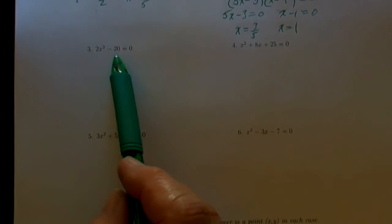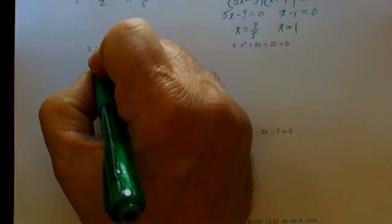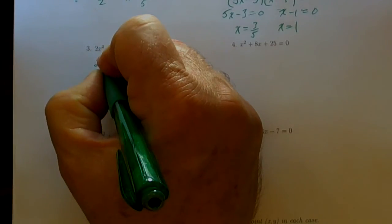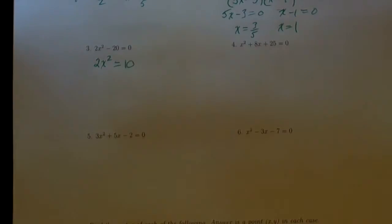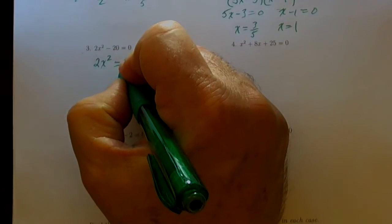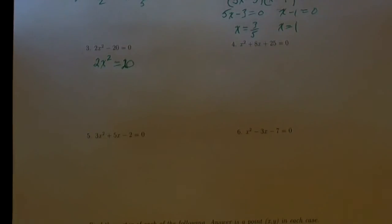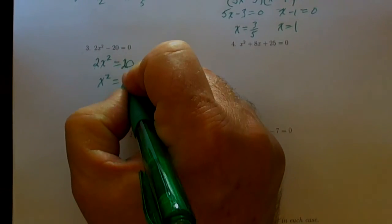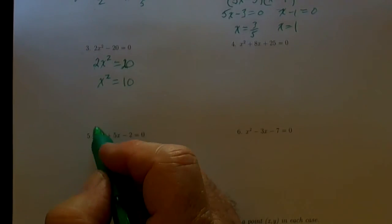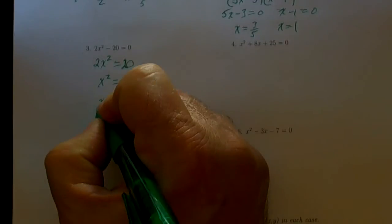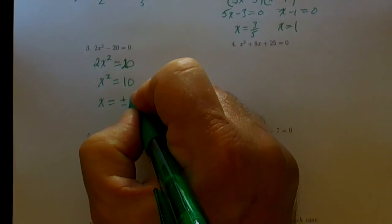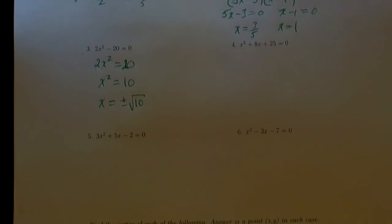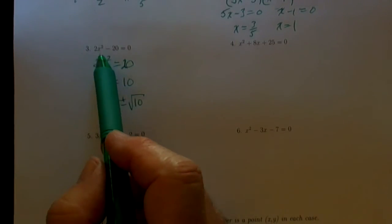Here's the next problem. All the x's are gathered together already, so I can use straightforward algebra: 2x squared equals 20 — adding 20 to both sides. Then dividing both sides by 2 gives x squared equals 10. Undoing the squaring by taking the square root of both sides gives x equal to positive or negative square root of 10.